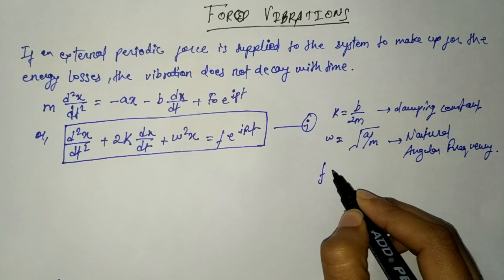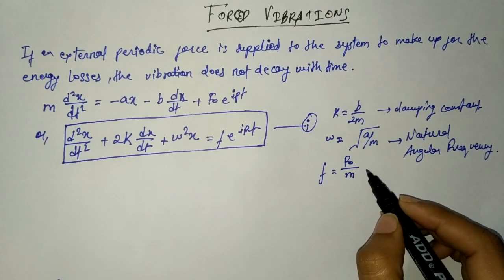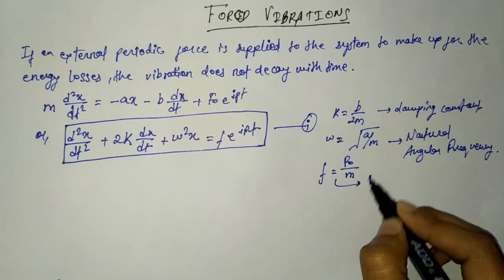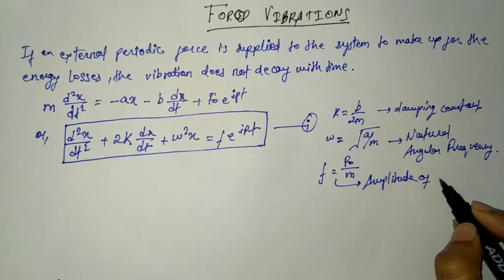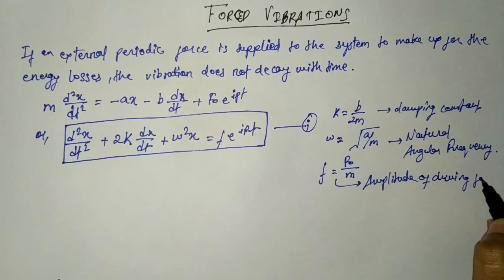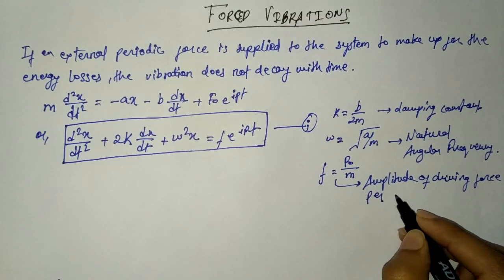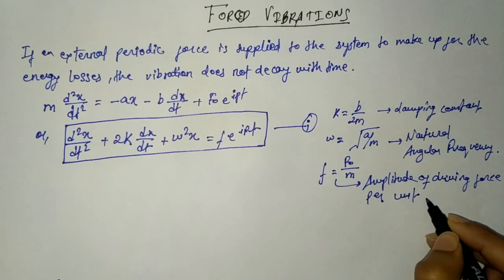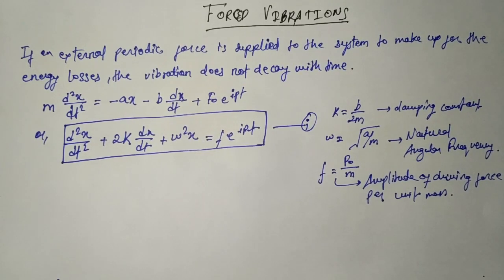Here ω represents √(a/m), which is the natural angular frequency, and small f = F₀/m, which is the amplitude of the driving force per unit mass. This is a second order, first degree differential equation for forced vibration.